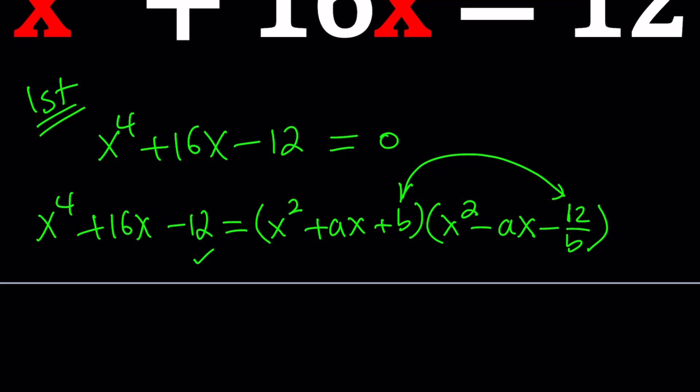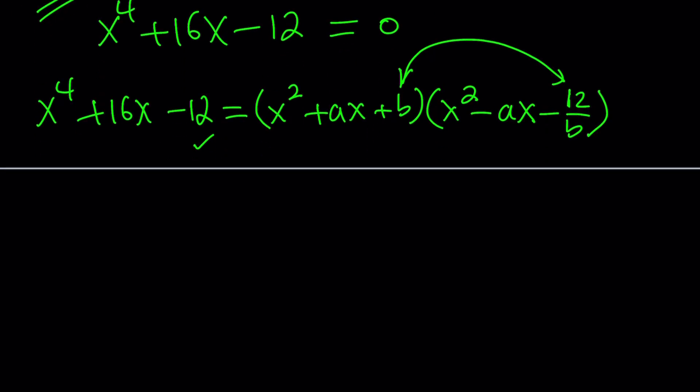Awesome. So we only have two variables, a and b. Let's try to solve for them. Distribute completely on the right-hand side. You get x to the fourth. And I'm not going to worry about this, because this is going to be negative ax cubed and positive ax cubed. So they're going to cancel out. So continue with everything else.